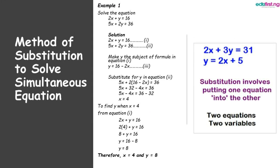For the first example, we have 2x plus y equal to 16 as equation 1, and 5x plus 2y equal to 36 as equation 2. To solve this, we pick up equation 1 and make y the subject of the formula, then we have y equal to 16 minus 2x. We label this equation 3.